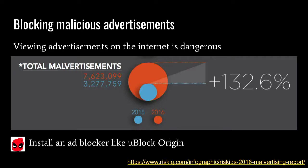Blocking malicious advertisements: viewing advertisements on the internet is probably the most dangerous thing a regular internet user will do as they're browsing around. There's been 132% growth in malvertising from 2015 to 2016 — malvertising is on the rise. Superhero says you should install an ad blocker like uBlock Origin. There's not really any safe way to use the internet without it. One of the browsers I really like is incentivised to make me want to look at ads, so they don't bundle ad blocking into their browser.